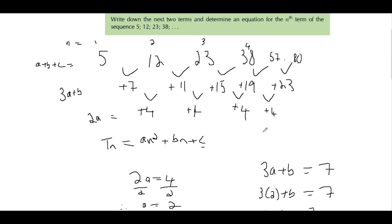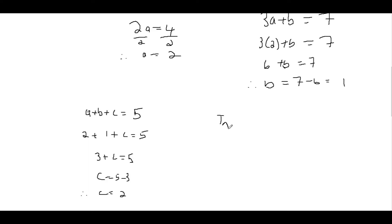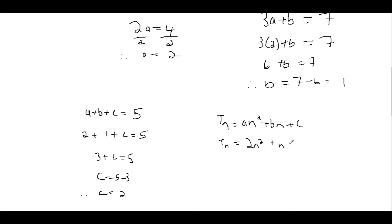Now we have all the terms of our equation. T(n) = an² + bn + c, with a = 2, b = 1, and c = 2. So T(n) = 2n² + n + 2. That is our equation for the sequence.